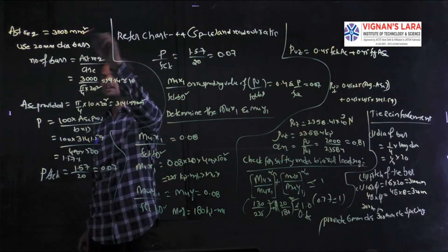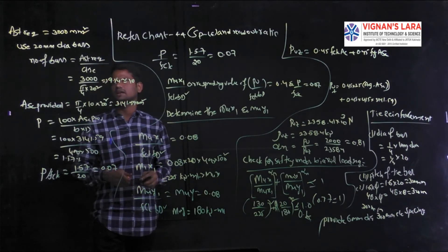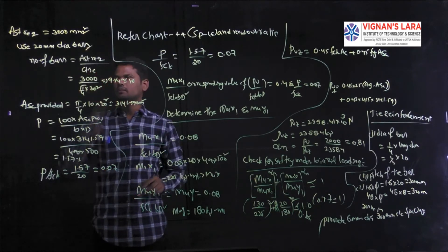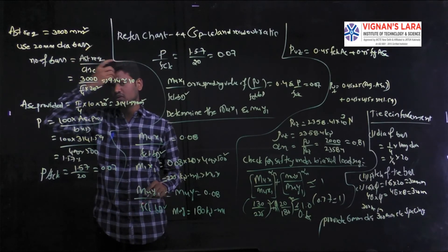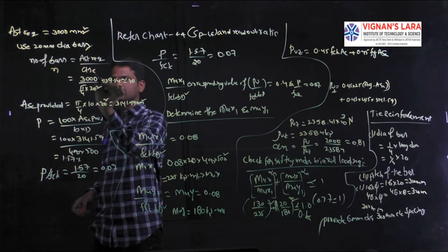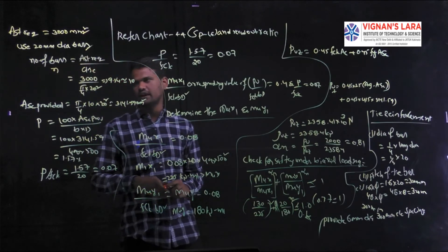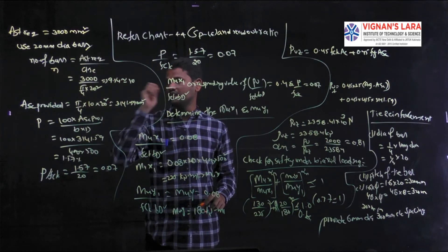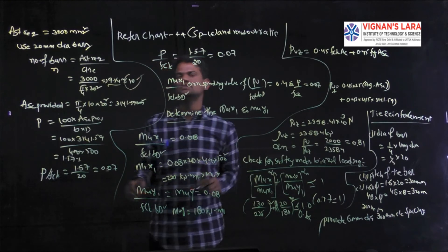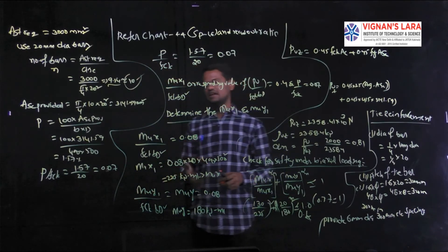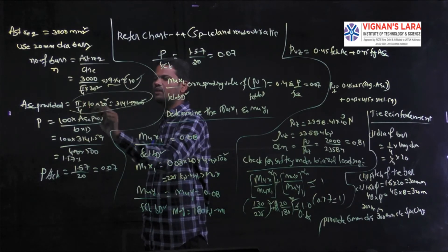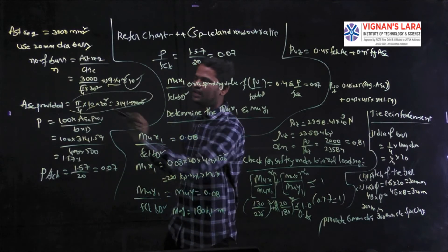Area of steel required = 3000 mm². Adopt 20 mm diameter bars. Number of bars n = AST required / area of single bar = 3000 / (π/4 × 20²) = 9.54, adopt 10 bars. AST provided = π/4 × 10 × 20² = 3141.59 mm². Percentage of steel provided pt = 100 × 3141.59 / (400 × 500) = 1.57%.